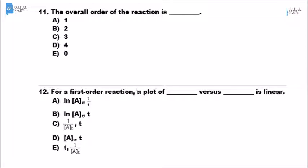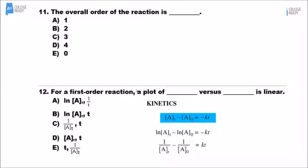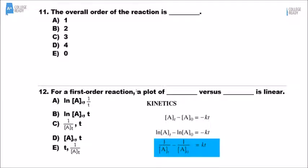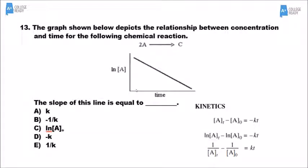For number 12, we go to the equation sheet used on the exam. The three integrated rate law equations correspond to zeroth, first, and second order. For first order, we use the middle equation. In slope-intercept form, we're graphing the natural log of [A] versus time — the only one that gives a straight line — with a slope of negative K. Number 13 gives you the graph and asks what the slope represents. Since it's the natural log, it's first order, and the slope equals negative K.